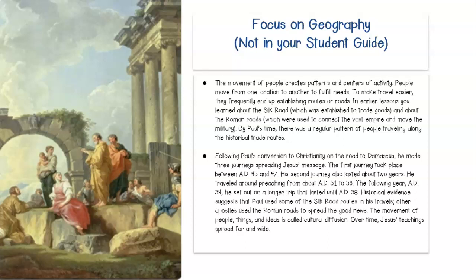By Paul's time, there was a regular pattern of people traveling along the historical trade routes. Following Paul's conversion to Christianity on the road to Damascus, he made three journeys spreading Jesus' message. The first journey took place between A.D. 45 and 47. His second journey also lasted about two years, traveling and preaching from about A.D. 51 to 53. The following year, A.D. 54, he set out on a longer trip that lasted until A.D. 58. Historical evidence suggests that Paul used some of the Silk Road routes in his travels. Other apostles used the Roman roads to spread the good news. The movement of people, things, and ideas is called cultural diffusion. Over time, Jesus' teachings spread far and wide.